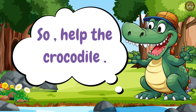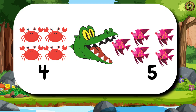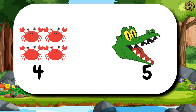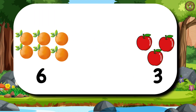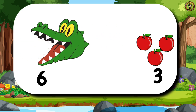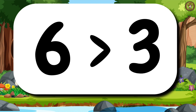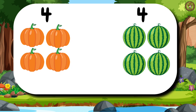So, help the crocodile. We have 4 crabs and 5 fishes. The crocodile will open its mouth and eat all 5 fishes because 5 is greater than 4. Let's take another example. We have 6 oranges and 3 apples. The crocodile will open its mouth and eat all the oranges because 3 is less than 6. Let's take one more example. We have 4 pumpkins and 4 watermelons. It means 4 pumpkins are equal to 4 watermelons.